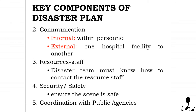Second, communication — good communication includes internal communication within personnel and external communication from one hospital facility to another. Third, resources — the disaster team must know how to contact resource staff. Fourth, security and safety — this is to ensure that the scene is safe. Fifth, coordination with public agencies.